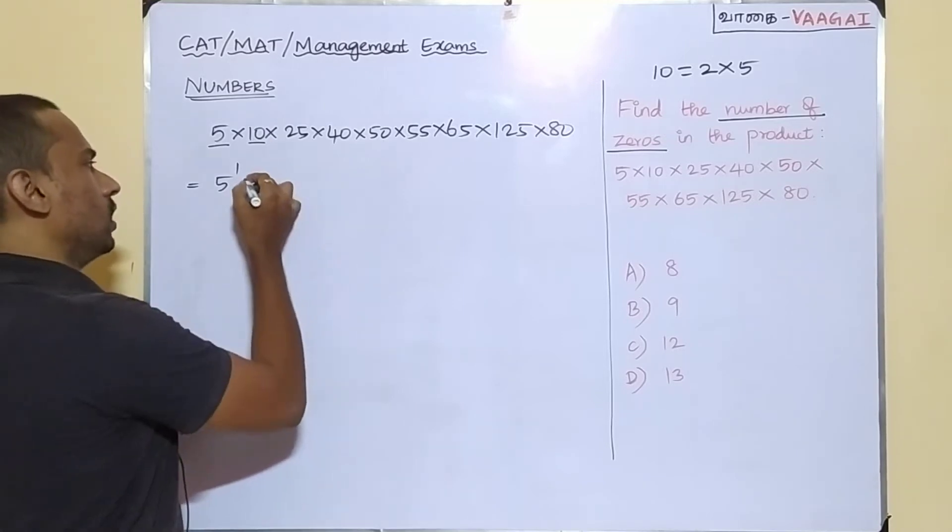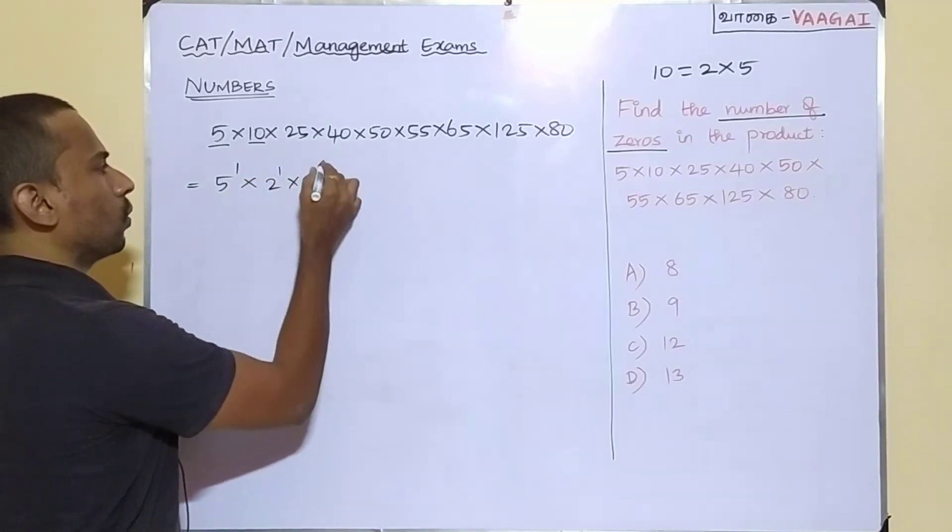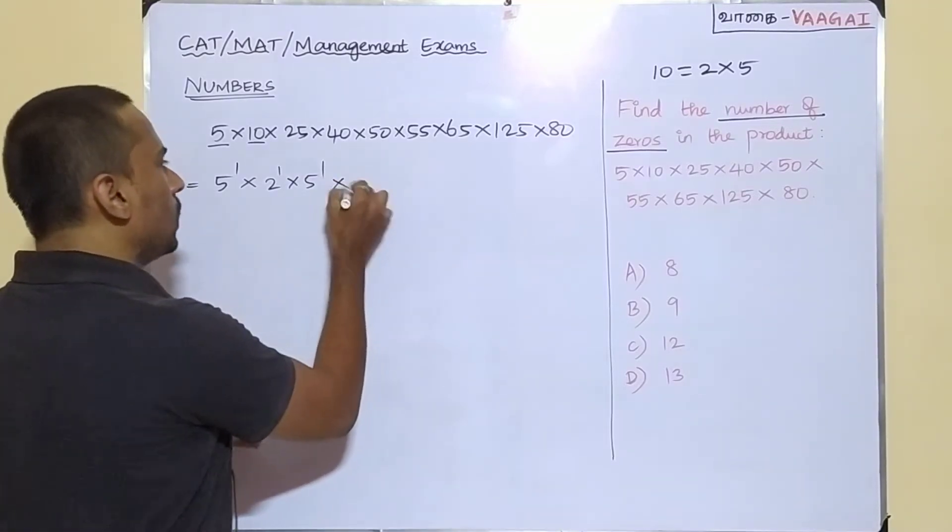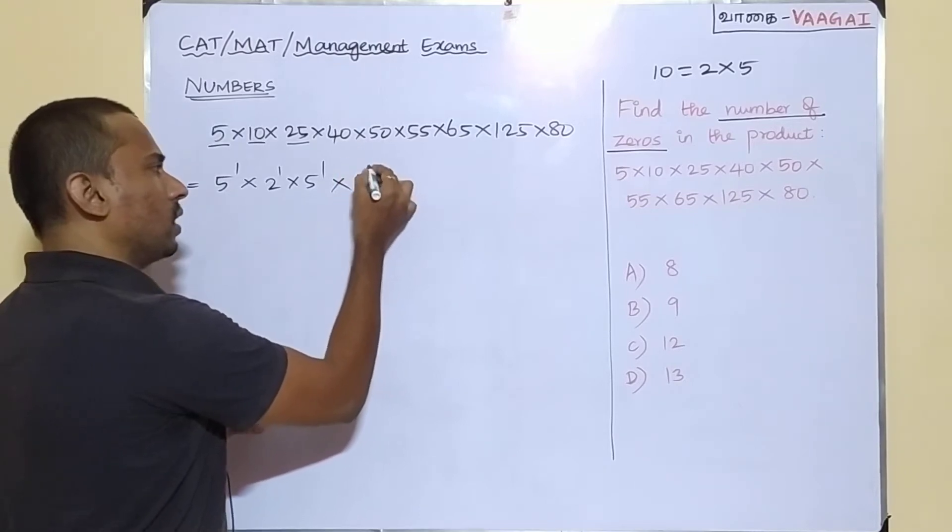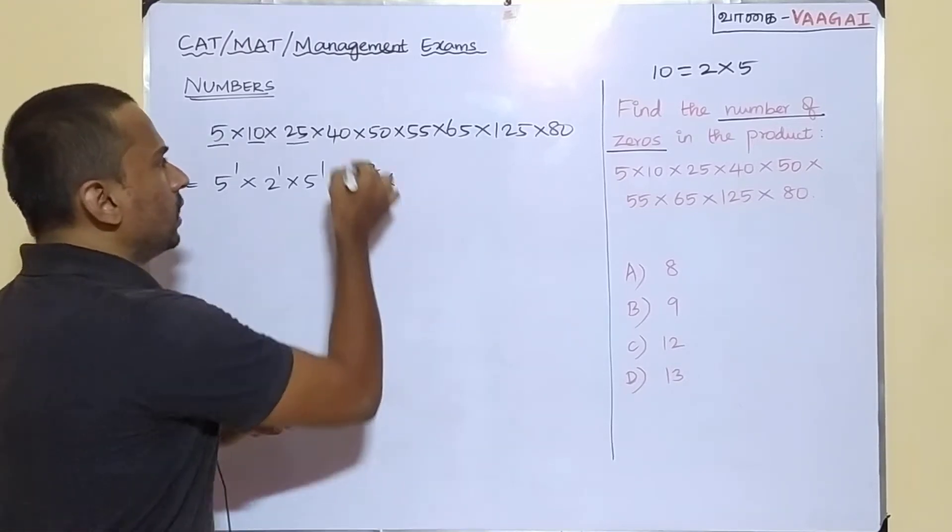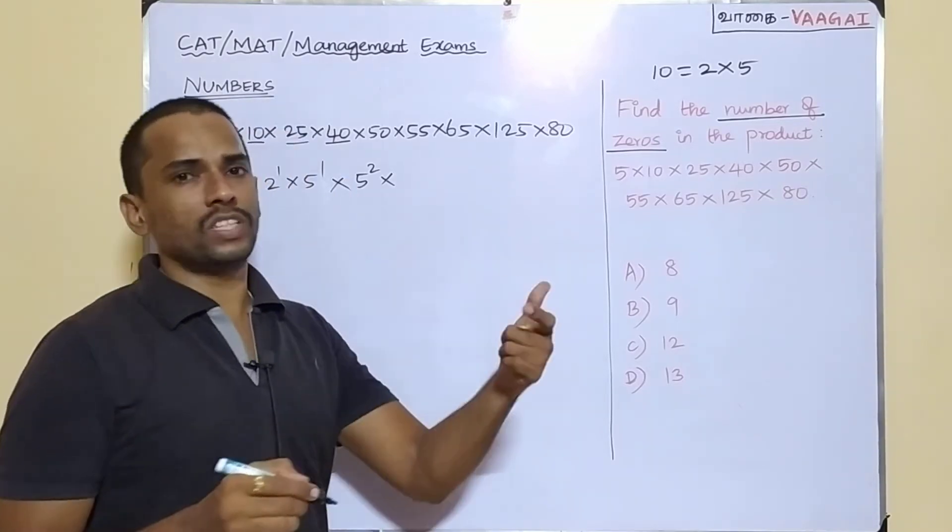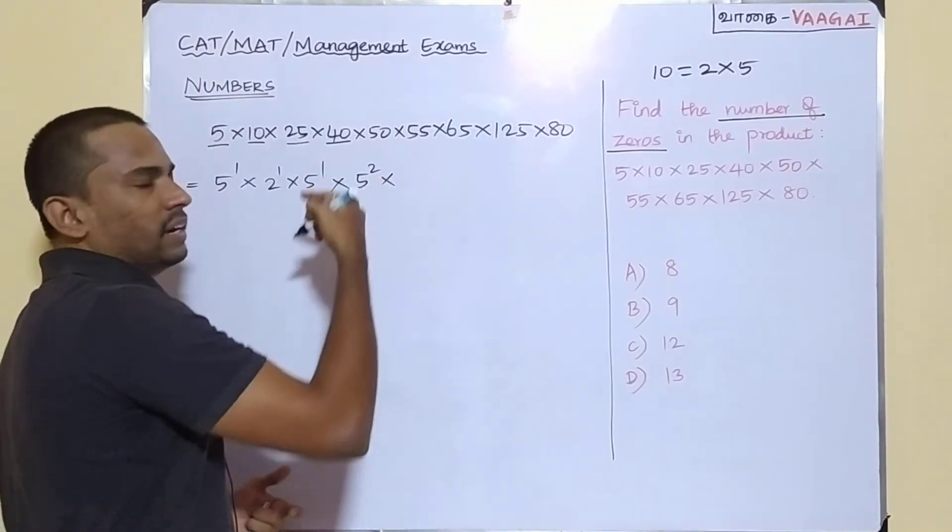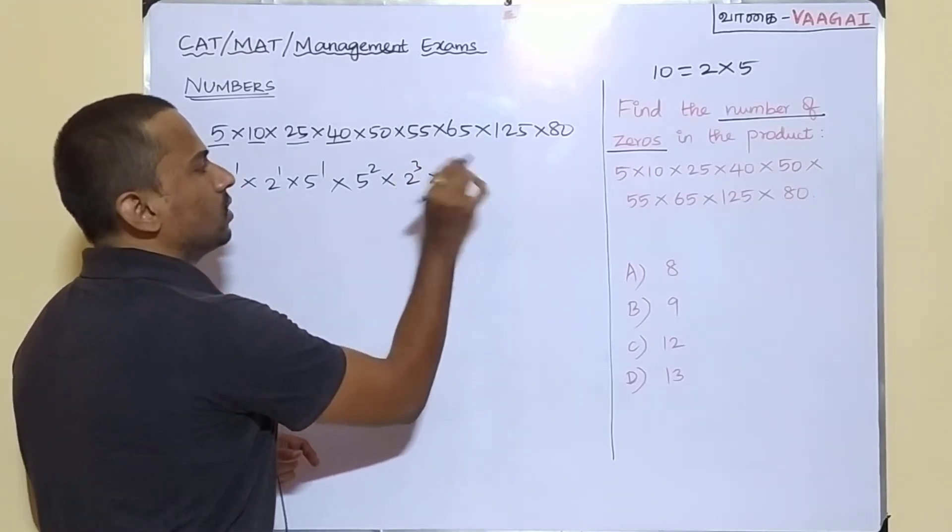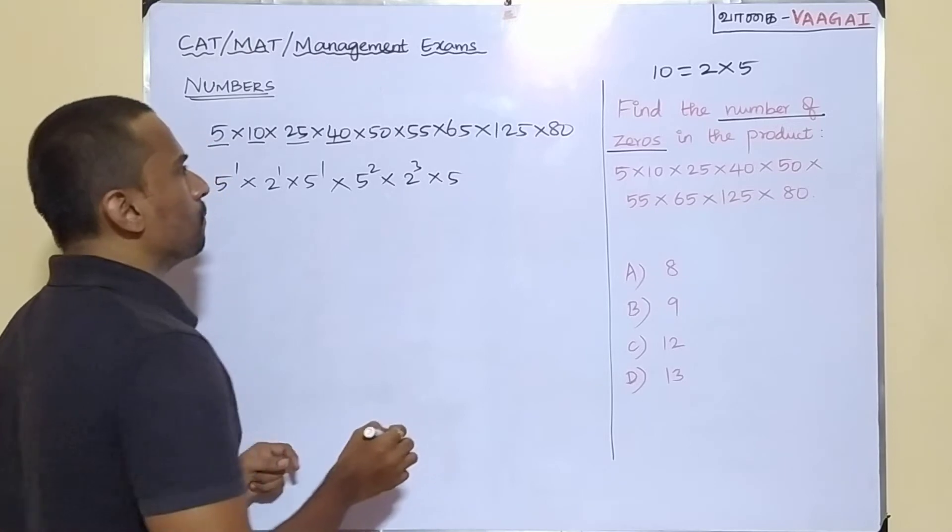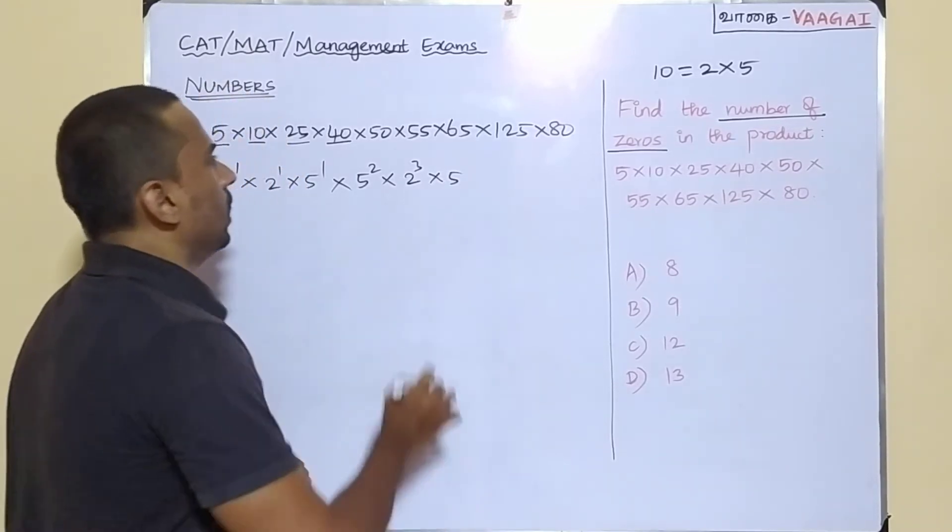Next, this 10 can be written as 2 power 1 into 5 power 1. Next comes this 25, which is nothing but 5 squared. Next comes this 40. This 40 is actually 8 times 5, so that means 40 can be written as 8, that is 2 cubed multiplied by 5. I am trying to rewrite the numbers in terms of 2s and 5s, wherever possible.